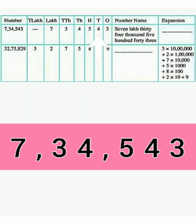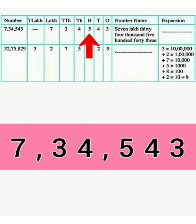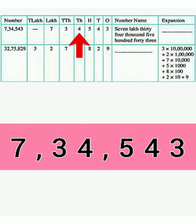The second digit from the right side is 4 and it is at the 10s place, and hence its value is 4 into 10 is equal to 40. The third digit from the right side is 5 and it is on the 100s place, and hence its value is 5 into 100 is equal to 500. The fourth digit from the right side is 4 and it is on the 1000s place, and hence its value is 4 into 1000 is equal to 4000.